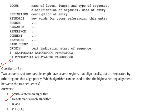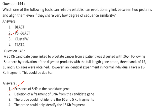The depiction of GenBank sequence entry format is option 4. When two sequences of comparable length have several regions that align locally but are separated by regions that align poorly, the Needleman-Wunsch algorithm is used for global alignment. The tool that can establish an evolutionary link between two proteins even with very low sequence similarity is PSI-BLAST. Answer is option 2.